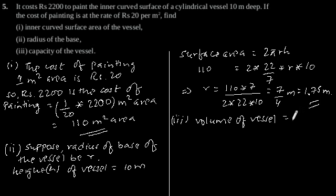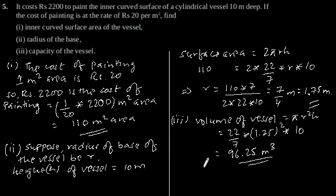Which is equal to πR²H. This is equal to 22/7 × 1.75² × 10. This is equal to 96.25 cubic meters. So the capacity of the vessel is 96.25 cubic meters, which is our answer.